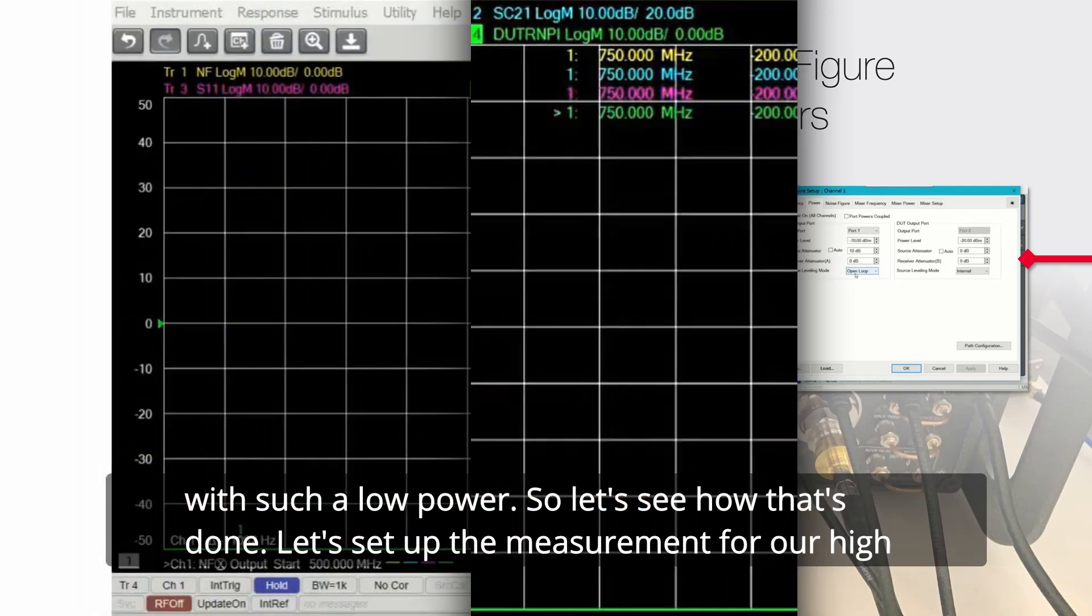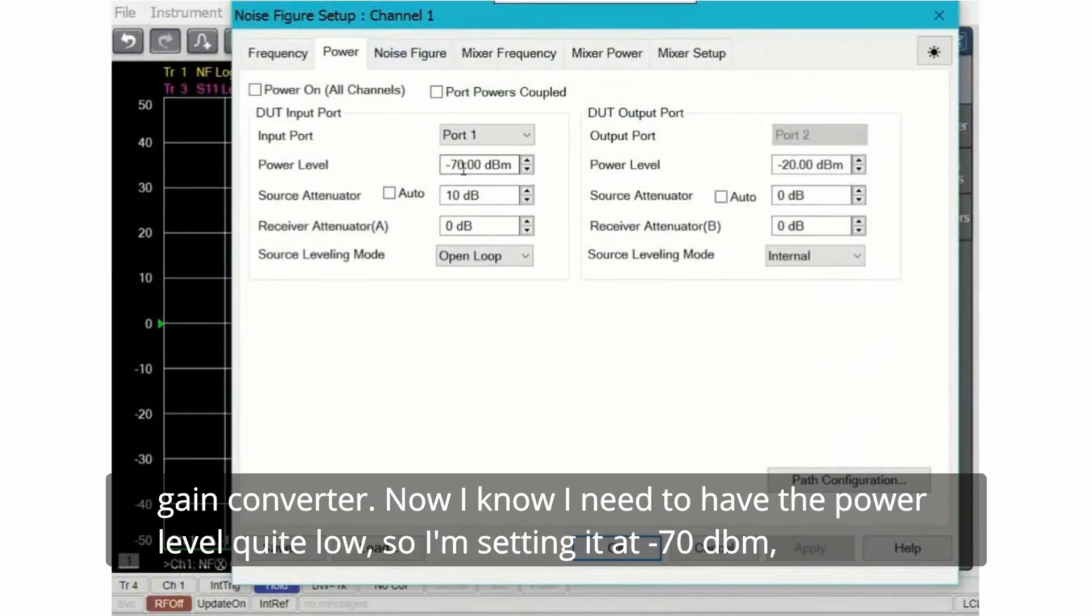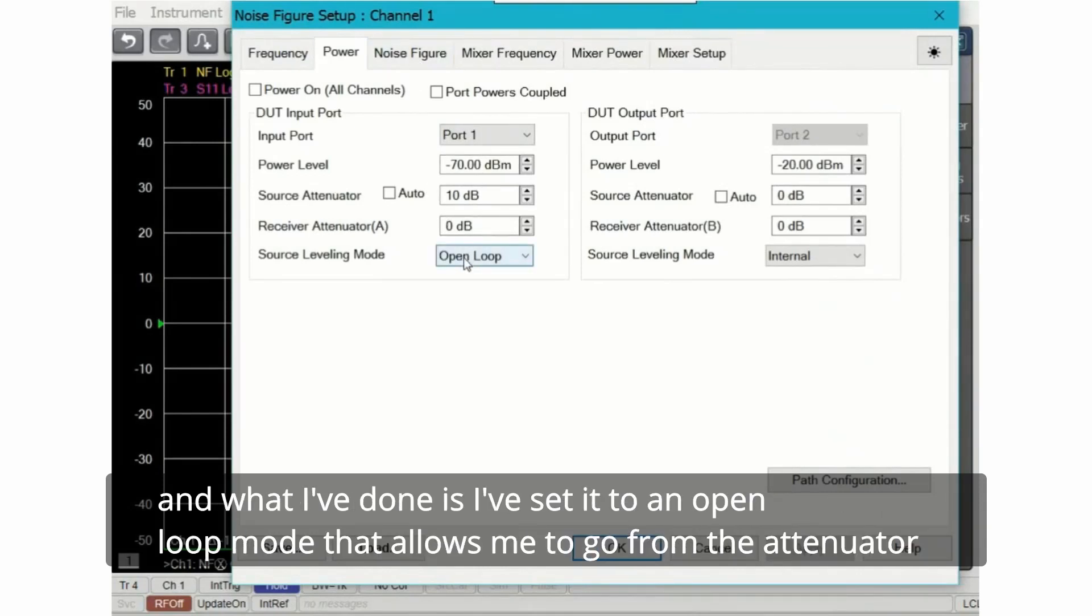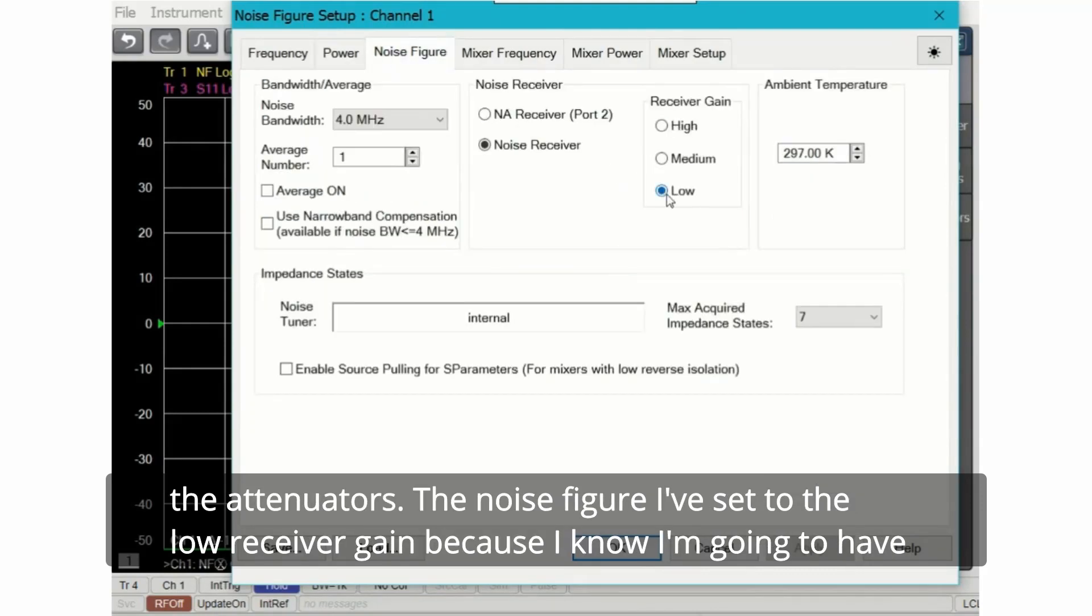Let's set up the measurement for a high gain converter. Now I know I need to have the power level quite low, so I'm setting it at minus 70 dBm. And what I've done is I've set it to an open loop mode that allows me to go from the attenuator setting down 60 dB. This is the most convenient way to get a low power without having to change the attenuators.